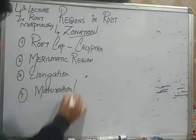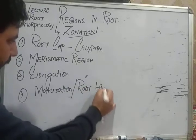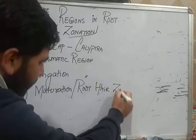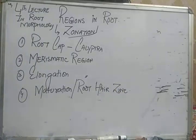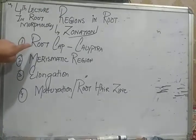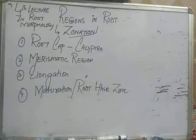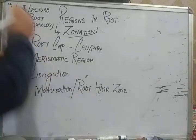Elongation region ke peeche jo hai, Maturation zone ya Maturation region, ya jisko hum kehte hain root hair zone. So if we differentiate the regions of root: first region is root cap, then Meristematic region, then Elongation region, then Maturation zone. Now let's explain these regions in detail.